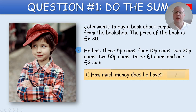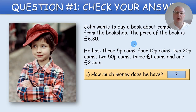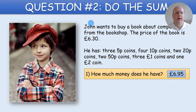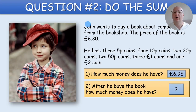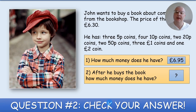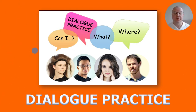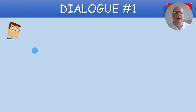Question number one is 'How much money does he have?' On the next slide, the students can see the answer and check if they got it correctly — you can actually do it as a group activity. Question number two: 'Do the sum — after he buys the book, how much money does he have?' And again on the next slide they can check their answers.